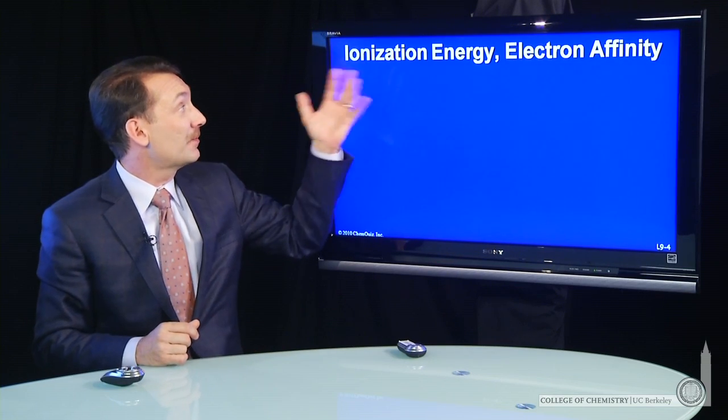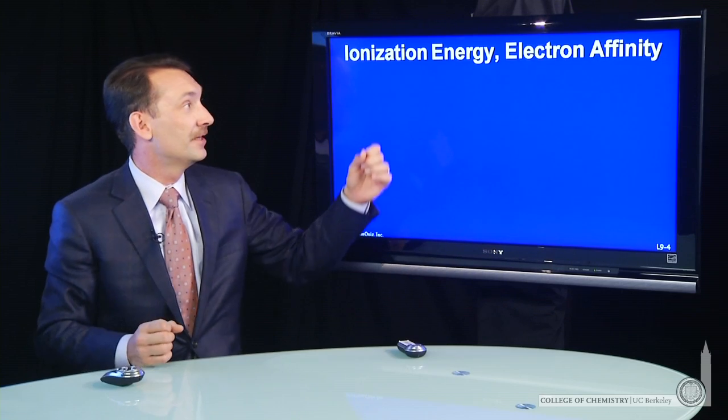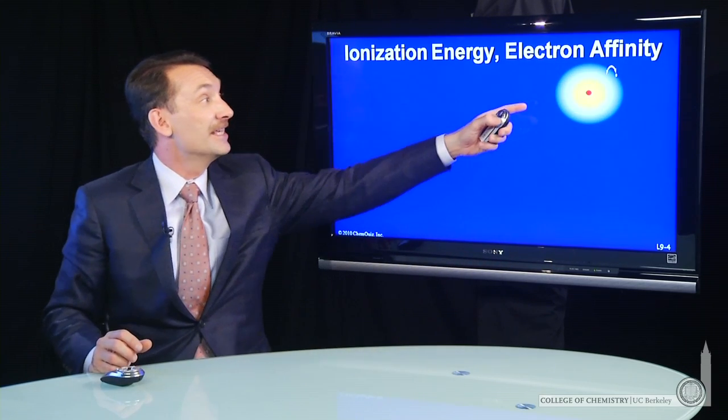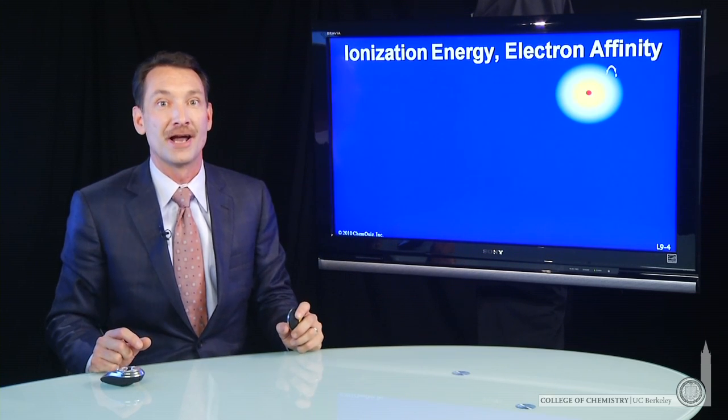We've talked a little bit about ionization energy already. That's separating electrons from atoms. There's also electron affinity. Electron affinity is the addition of an electron to an atom or an ion.